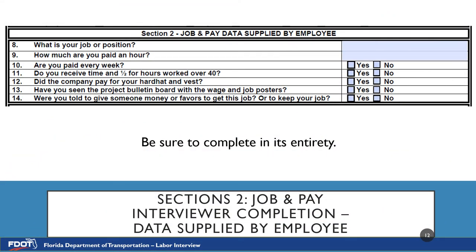Section 2 is Job and Pay Data Supplied by Employee. Number 8 is: What is your job or position? Please write down the answer the employee gives regardless of what they were observed doing or what prior knowledge you have about their duties. This is important as we need to ensure the employee understands their job title. Number 9 is How Much Are You Paid an Hour? Sometimes an employee does not want to disclose this information; if so, please notate as such.